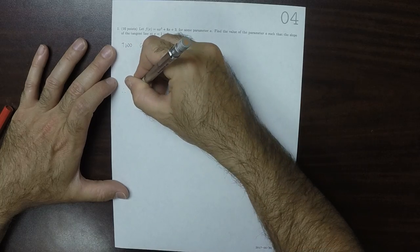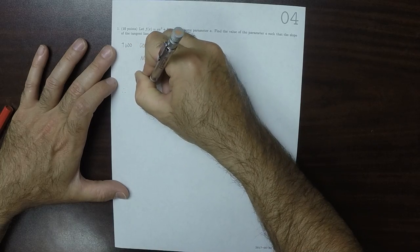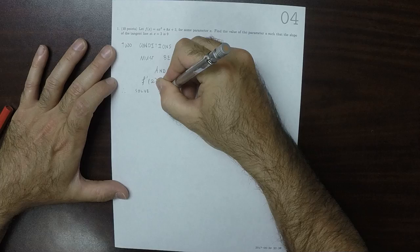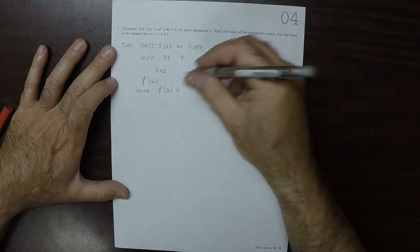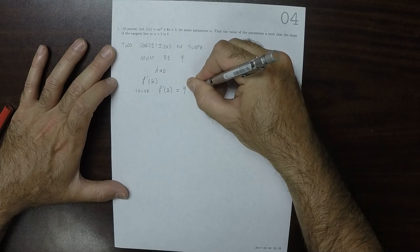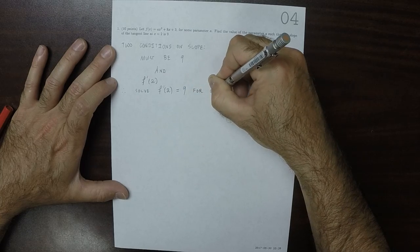Therefore, what we need to do is solve f'(2) = 9 for the parameter a.